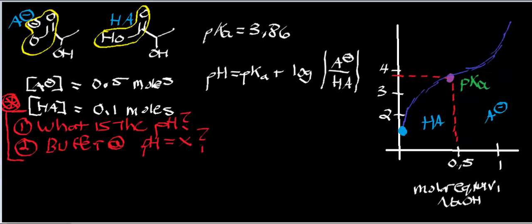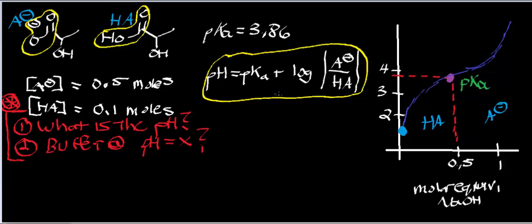Welcome back. What we're going to do in this video is talk about Henderson-Hasselbalch problems. What I have written here is the Henderson-Hasselbalch equation. What we did in the last video is we talked about that at the pKa, when the pKa is equal to the pH, the concentrations of the conjugate base and the conjugate acid are equal.